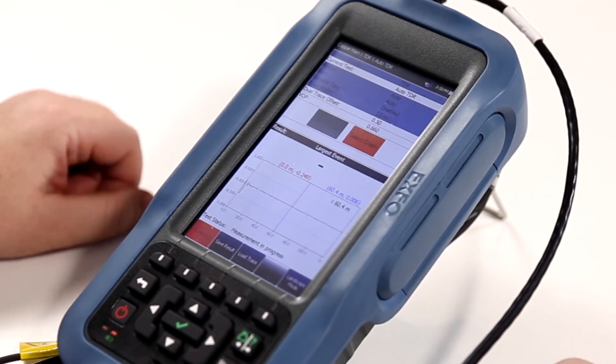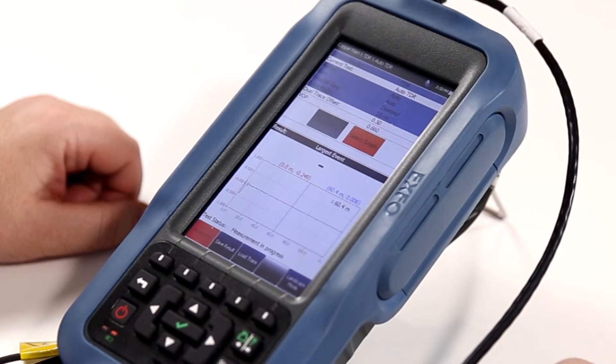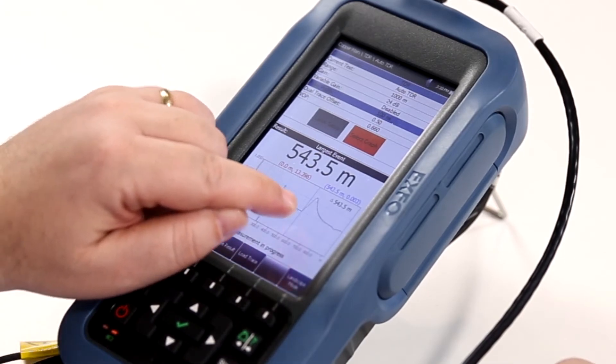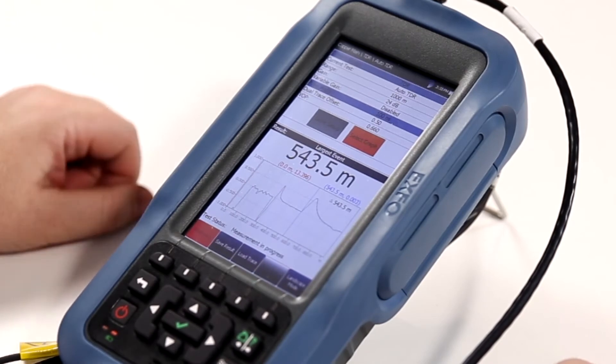The Auto TDR will do analysis of the circuit and it will present to the user what is the optimum range, gain, and pulse width for that particular circuit based on if there are faults on the line and where the end of the circuit is. In this particular case, we can clearly see that we have a bridge tap and the end of the circuit being identified.